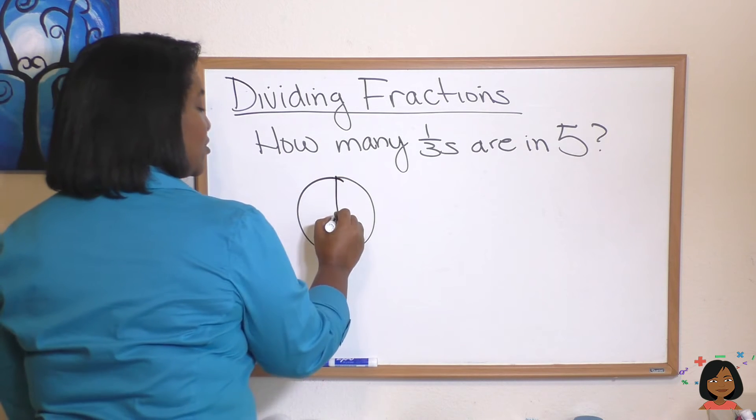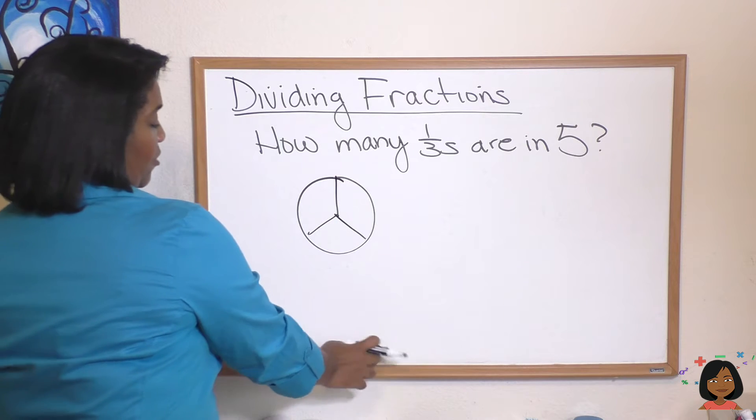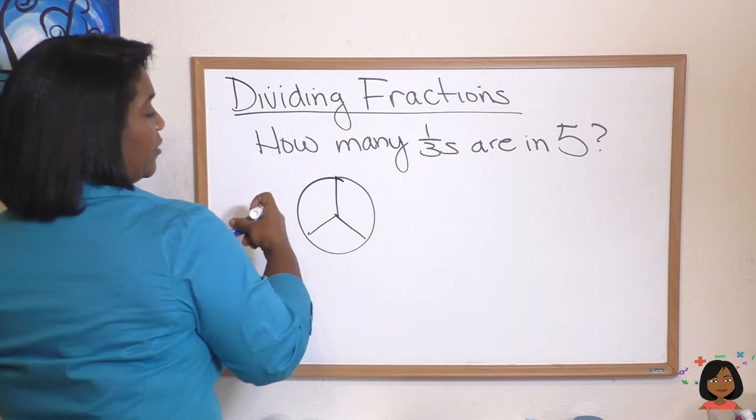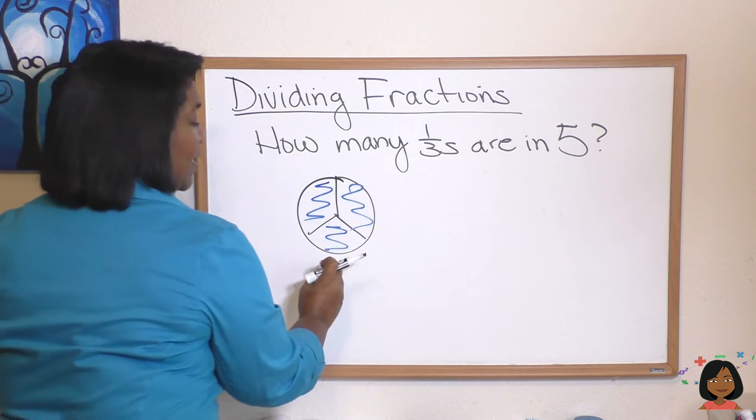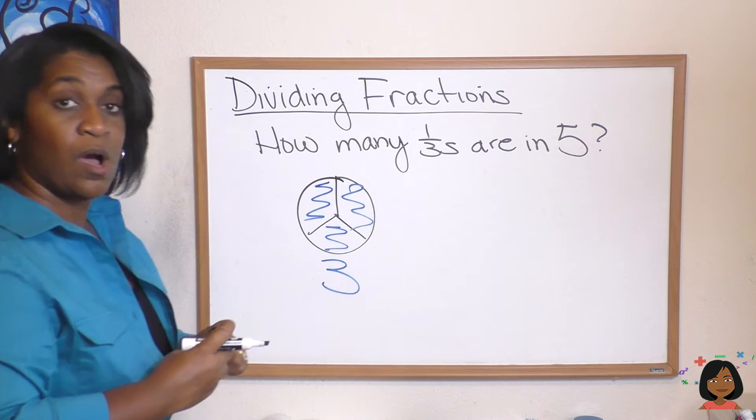And how many one-thirds are there in one? Well let's divide this into thirds. And here's a third, here's a third, and here's a third. So how many one-thirds are there? Well the answer to that is three.